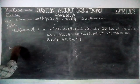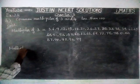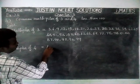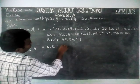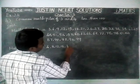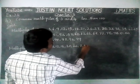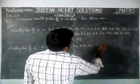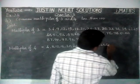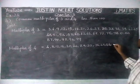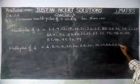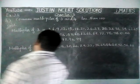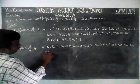Now we are going to find multiples of 4: 4, 8, 12, 16, 20, 24, 28, 32, 36, 40, 44, 48, 52, 56, 60.